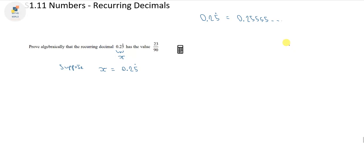I'm aware that it is a calculator question, but we could just put 25 over 90 on the calculator, press the SD button, and prove we get 0.255 recurring. Although a calculator is allowed, it's not actually necessary to use it because the question's asking us to prove algebraically that this value is equal to 23 over 90.